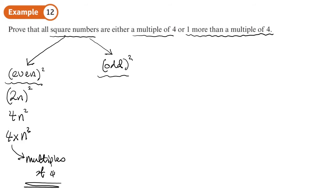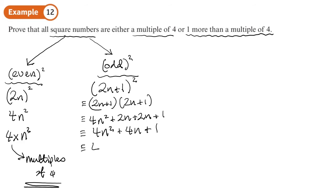Now how about when you square an odd number? Well, an odd number could be 2n plus 1 or 2n minus 1. Let's do 2n plus 1. Let's square that. So it's going to be 2n plus 1 times by 2n plus 1, which is going to give you 4n squared plus 2n plus 2n plus 1. So 4n squared plus 4n plus 1. Now that can be factorized to give you 4(n squared plus n) plus 1.